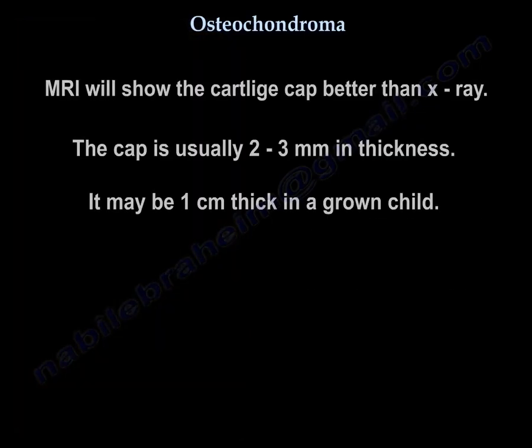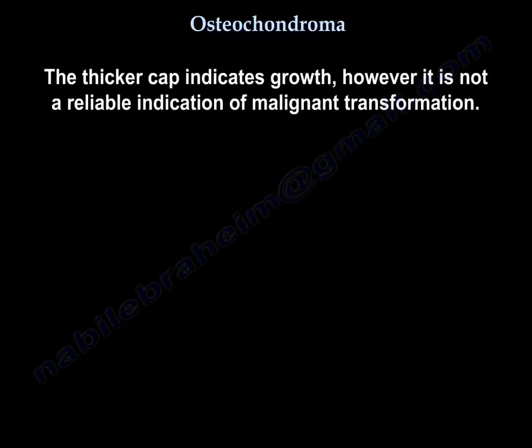Osteochondromas often arise at the site of tendon insertion, with the direction of growth along the line of the tendon. MRI will show the cartilage cap better. The cap is usually 2–3 mm in thickness, and may be up to 1 cm in a growing child. A thicker cap indicates growth, but is not a reliable indicator of malignant transformation.